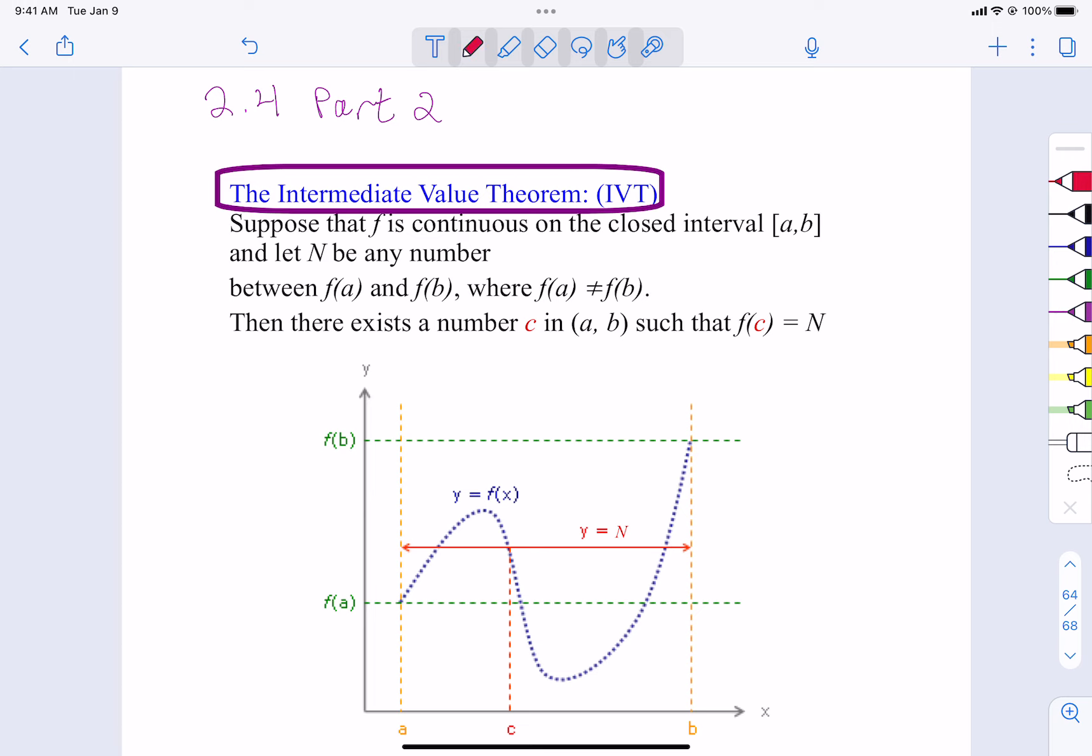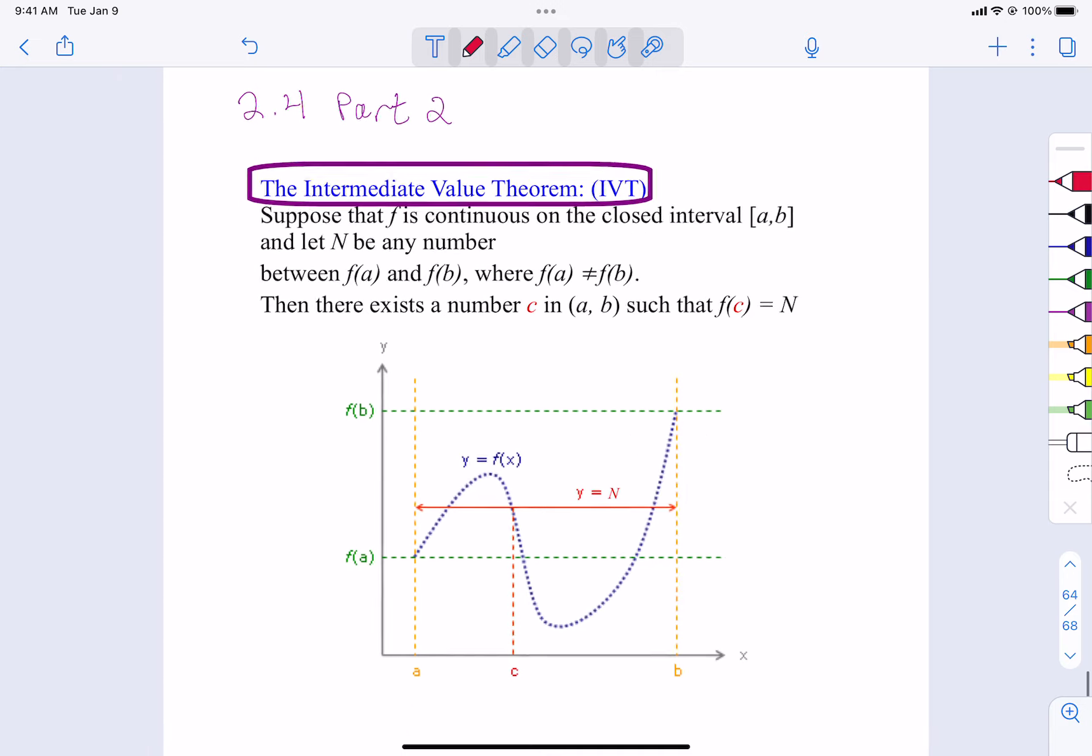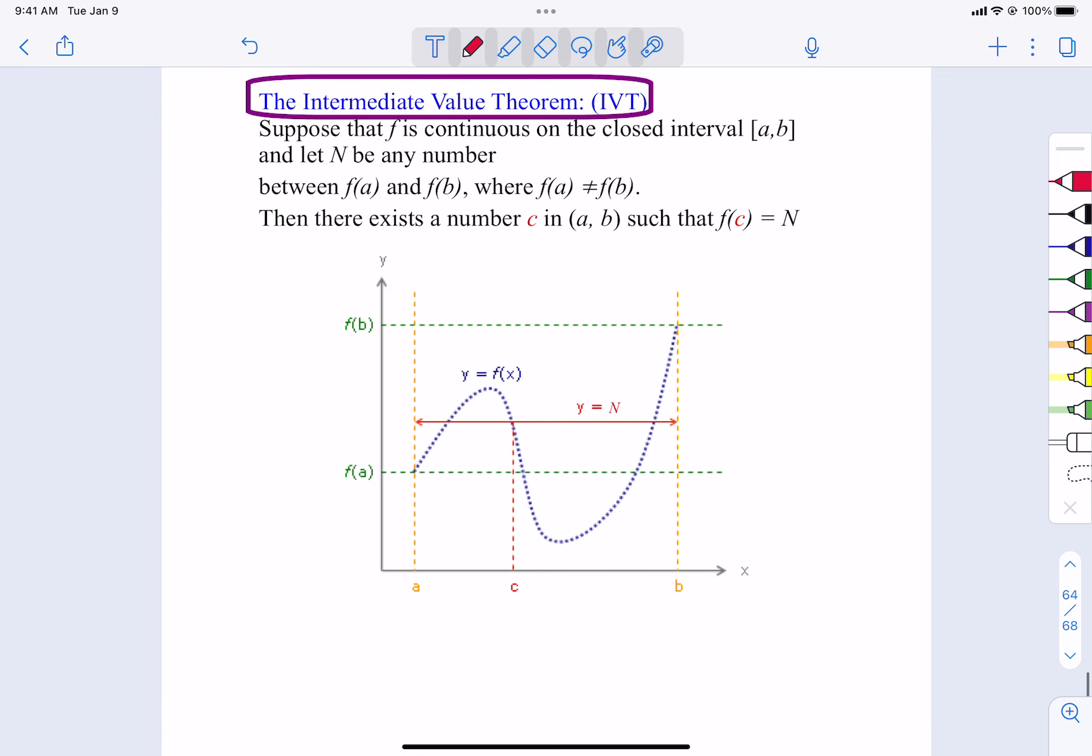Today we're going to talk about the Intermediate Value Theorem, which is basically a result of a function being continuous. So basically what it says is that if you have a continuous function that is continuous on a closed interval from A to B, and if you pick any number that is between the height at f(A) and the height at f(B).